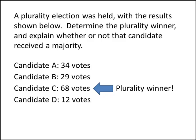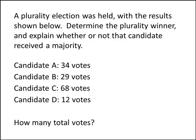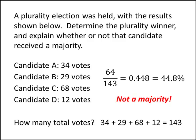Figuring out whether or not that candidate received a majority is also not too hard. What we need to do is find out how many total votes there were, and then figure out whether candidate C got more than 50% of those votes. So we add up the total: 34 plus 29 plus 68 plus 12. Punching that into our calculator gives us 143. If we take the votes C got and divide by 143, we see that C received 44.8%, which is less than 50%, so that's not a majority.